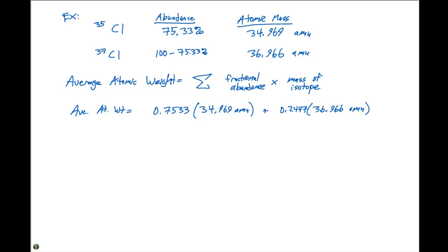When we go through and do the math, our average atomic weight is going to equal 35.45 atomic mass units. And this is the number that we're going to see on the periodic table for chlorine. And this is how, by using a mass spectrometer, that all of these atomic weights are determined for each element on the periodic table.